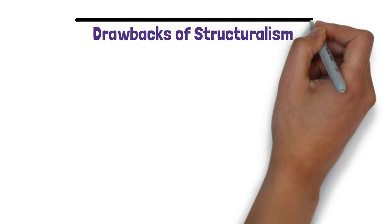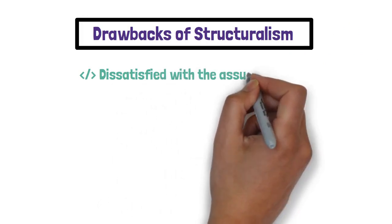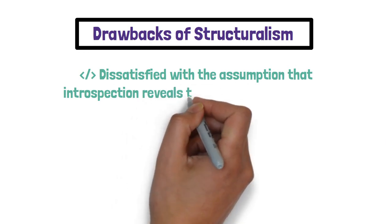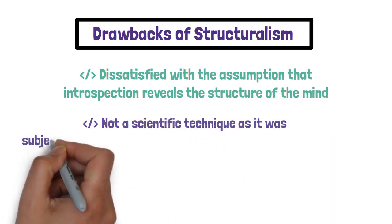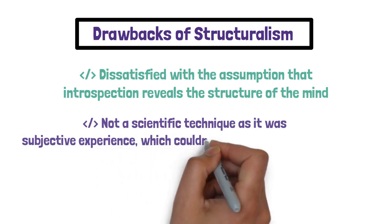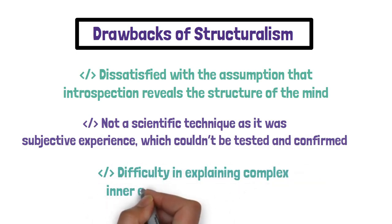Structuralism was not free of drawbacks. The assumption that introspection reveals the structure of the mind itself was not satisfactory. Introspection is not a scientific technique as subjective experiences couldn't be tested and confirmed. It is difficult to explain complex inner experiences like emotions. Critics believe that studying consciousness is like trying to study the wind. Conscious ideas are constantly flowing in an ever-changing stream. As the saying goes, you cannot step into the same river twice. Catching the exact stream of conscious thoughts is also not possible.